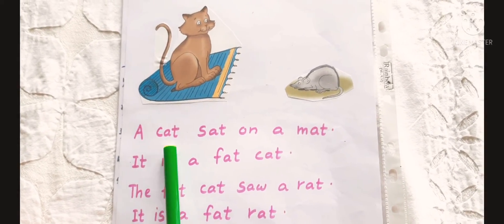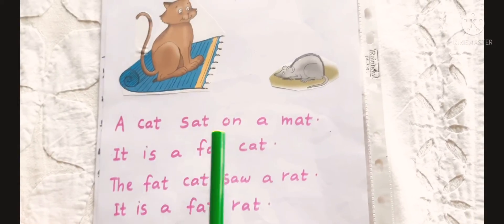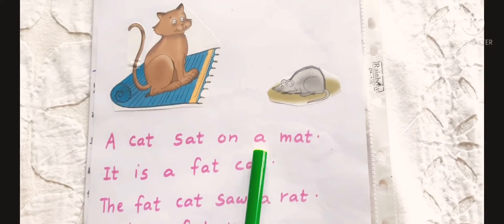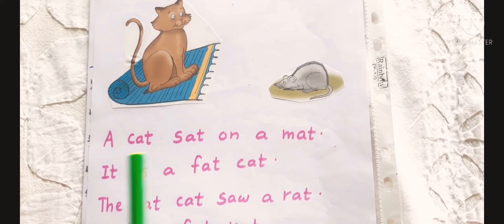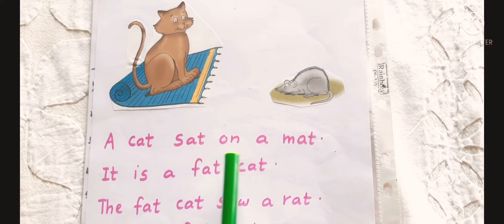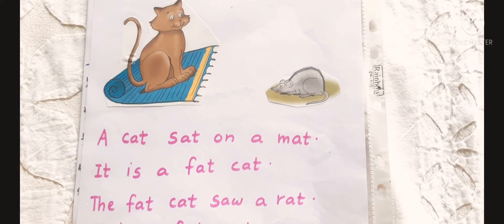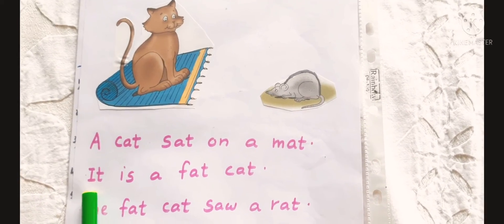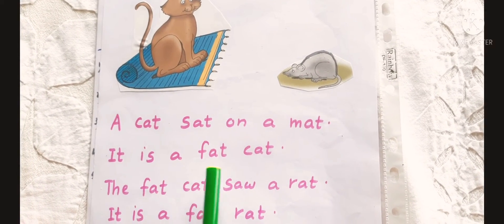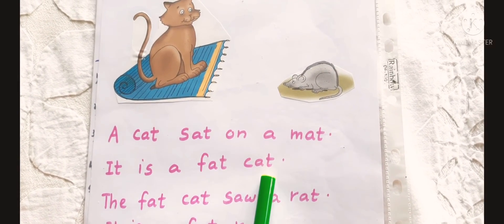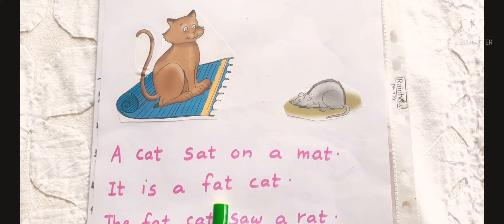A cat sat on a mat. A cat sat on a mat. It is a fat cat. It is a fat cat.